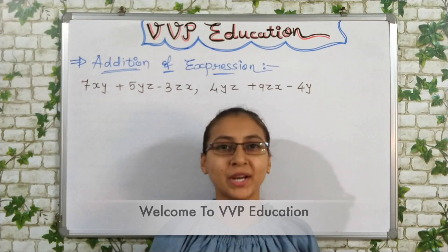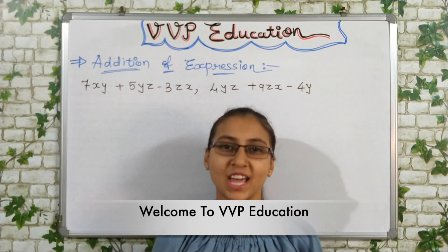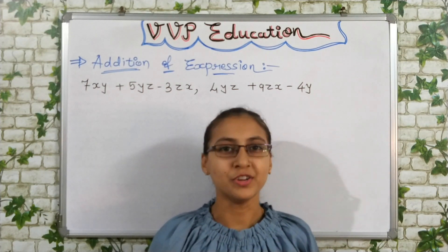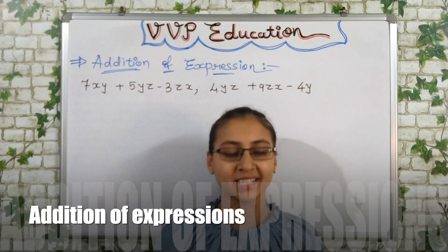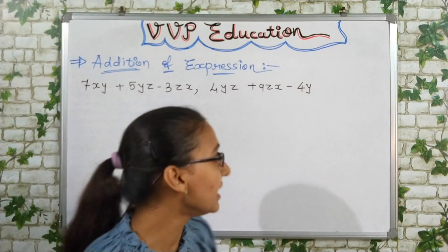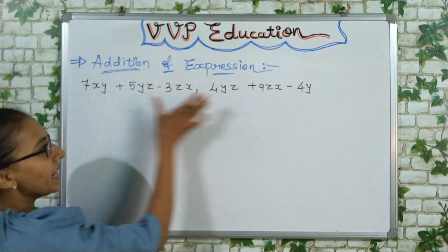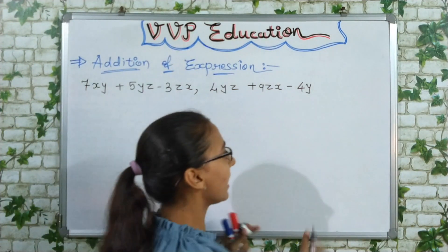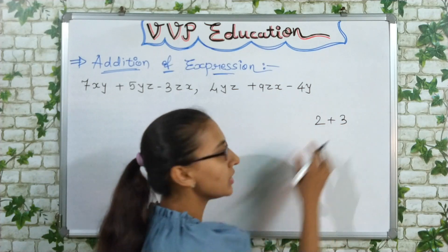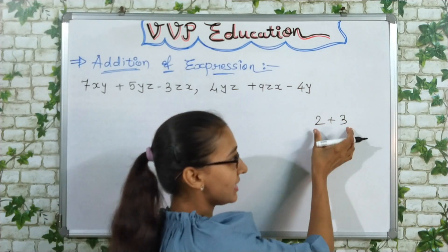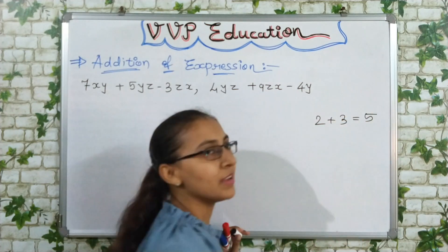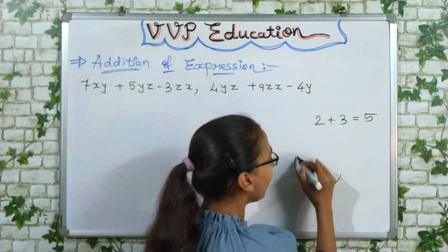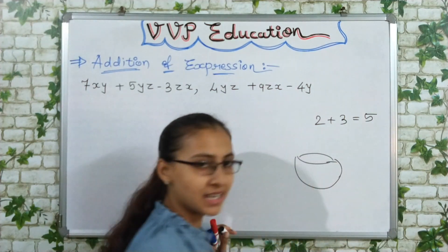Hi friends, welcome back to my channel VVP Education. Let's continue our series on algebra. In this video you will learn addition of expressions. Before we start, let's recall that integers are whole numbers — suppose two and three are two numbers, then 2 plus 3 is 5. We can directly do that addition.